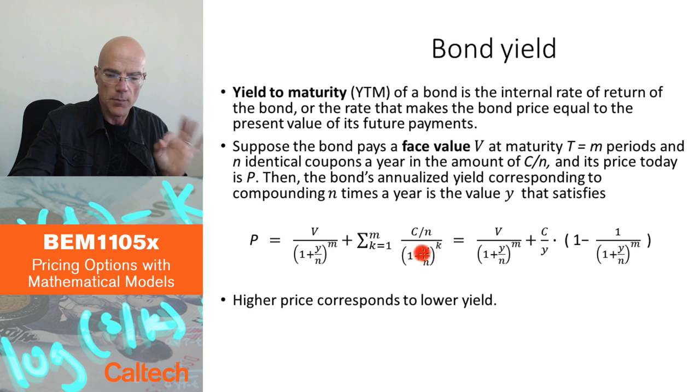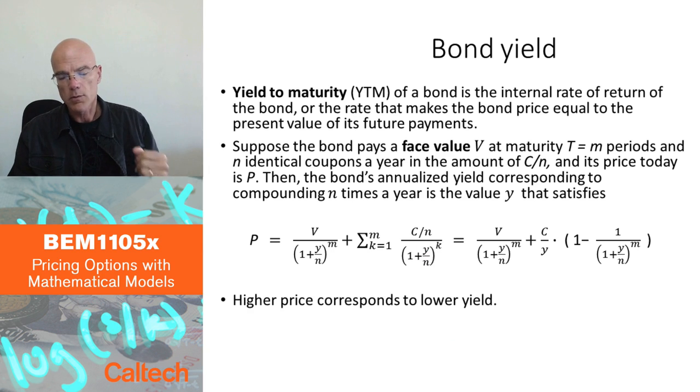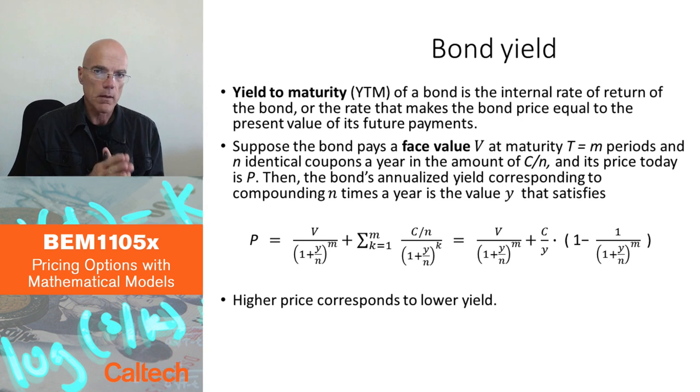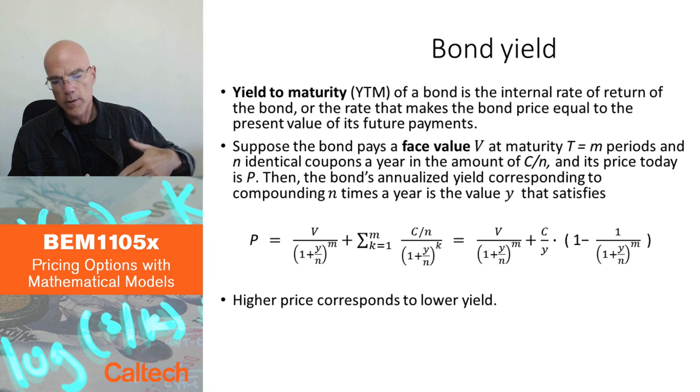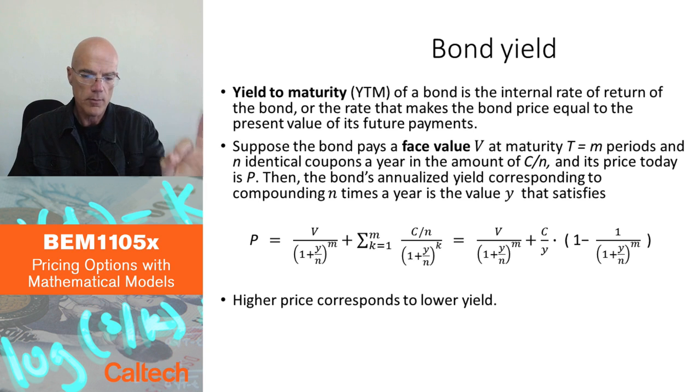That yield is going to be in fact random because I don't know what it's going to be tomorrow, since the price will be different tomorrow. But at the moment I'm not modeling that. We are going to do that much later in the course. Right now I'm not modeling this random movement from day to day. I'm just looking from the point of view of today what the current yield of the bond is. There is no randomness.